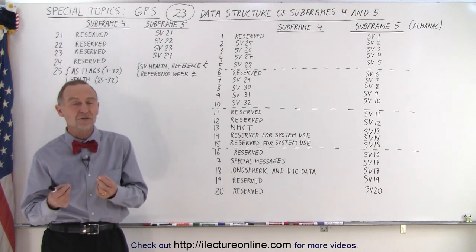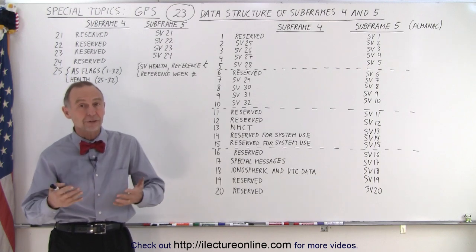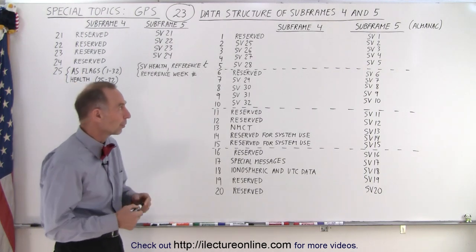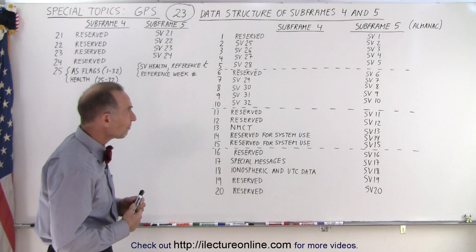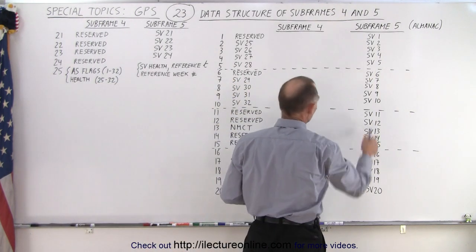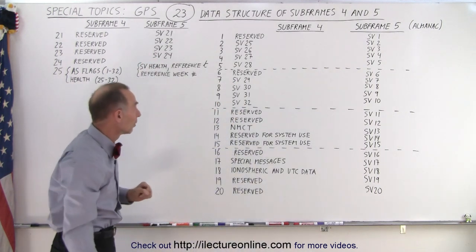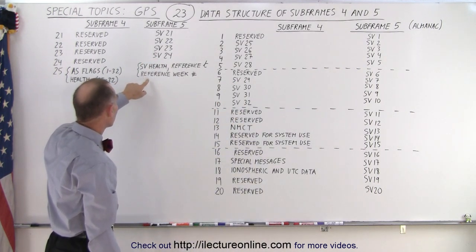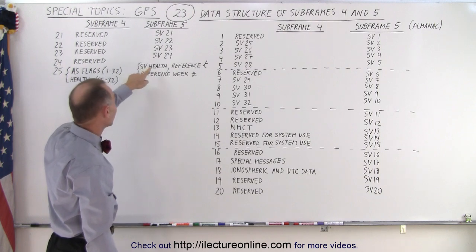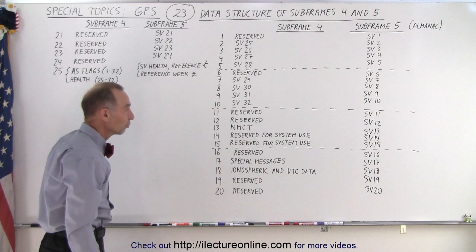Now they contain the information of all the satellites in the constellation, as many as 32. There's room for 32. And subframe 5 contains the almanac information of the first 24 space vehicles. The last subframe, number 25, contains the SV health for 1 through 24, reference time, and the reference week number.